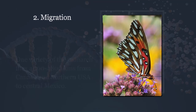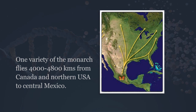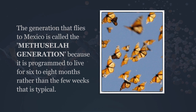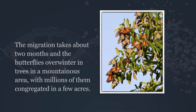Now let's look at migration. One variety of the monarch butterfly flies 4,000 to 4,800 kilometers from Canada and northern USA to central Mexico. That generation that flies to Mexico is referred to as the Methuselah generation — programmed to live for six to eight months instead of the few weeks typical for a monarch. Migration takes about two months and the butterflies overwinter in trees in a mountainous area of Mexico, with millions of them congregated in just a few acres.